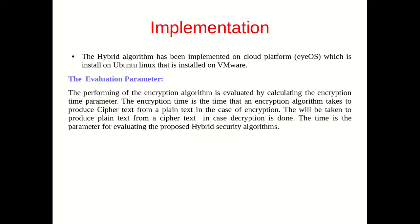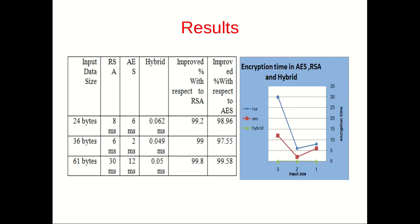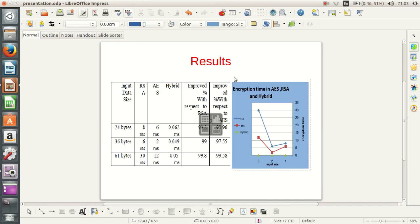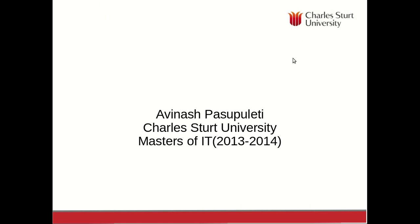When we tried to do this, the speed and reliability are both questionable. To verify that, we implemented this algorithm on the iOS platform using Ubuntu, Linux, and virtual machines. The evaluation parameter is the time taken for encrypting data into ciphertext and decrypting it back to original text. For 24 bytes of data, RSA took 8 milliseconds, AES took 6 milliseconds, whereas the hybrid took 0.062 milliseconds — an improvement of 99.2% over RSA and 98.96% over AES. For 36 bytes of data, RSA took 6 milliseconds and AES took 2 milliseconds, while hybrid took only 0.049 milliseconds — a very huge difference in performance.